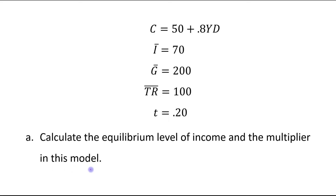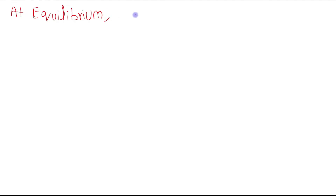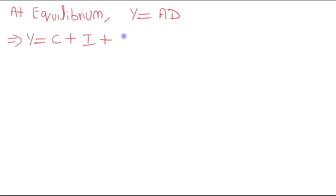First, let's calculate the equilibrium level of income. At equilibrium, Y equals AD — aggregate demand. So we write Y equals consumption plus investment plus government expenditure plus net exports.